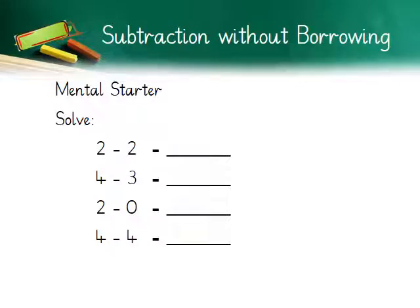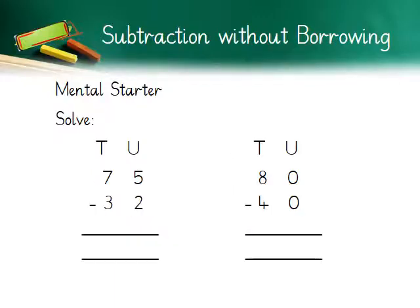Let's start the lesson with mental starters — these are very simple sums you have to solve. 2 minus 2 — yes, 0. When the same numbers are subtracted, the answer is always 0. 4 minus 3 — the answer is 1. 2 minus 0 — the answer is 2. When 0 is subtracted from a number, the answer is always the same number. 4 minus 4 — yes, 0. Good job!